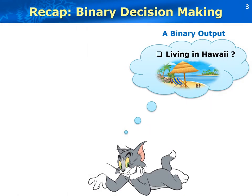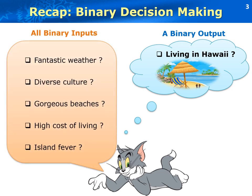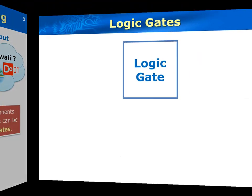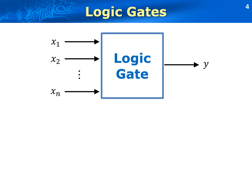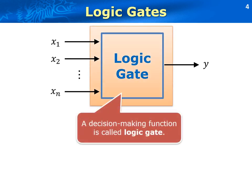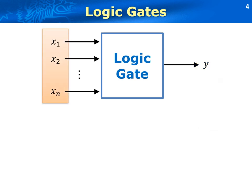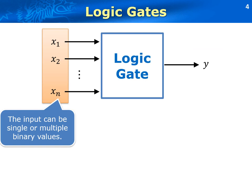In the last session, we illustrated a real-world application of MP Neuron. Tom wants to make a decision whether to live in Hawaii based on several factors. All the inputs and outputs in this example are binary values: 1 for yes and 0 for no. The decision-making elements that process binary values can be represented by logic gates. This is a generic logic gate diagram. The decision-making element is the logic gate, which is a boolean function. The output of the logic gate is a single output which takes value 1 or 0, and the inputs can be single or multiple values. The output changes for every input combination.